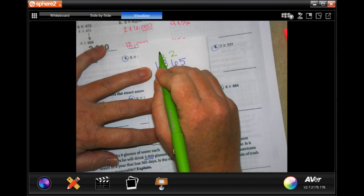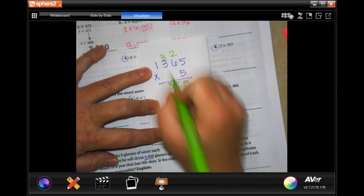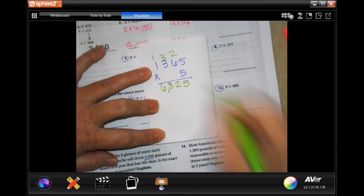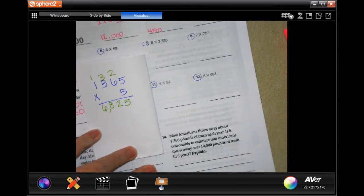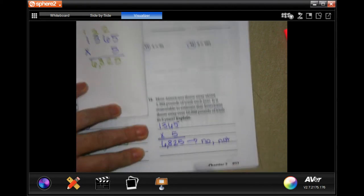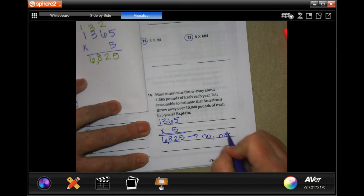Five times three is 15, plus three more is 18, carry your one. And five times one is five, plus one more is six. So we're going to write our math down, and we're going to write no, it's not over 10,000 pounds.